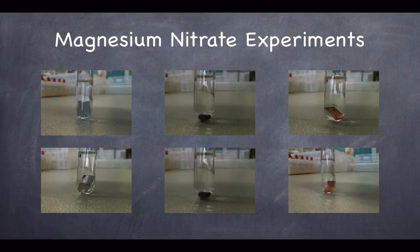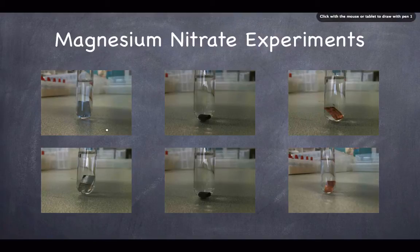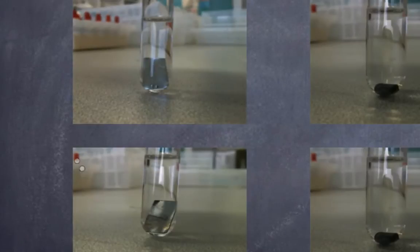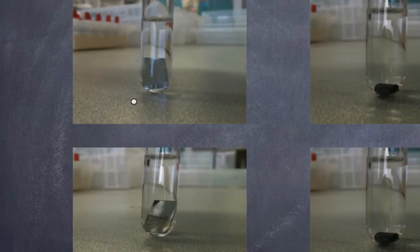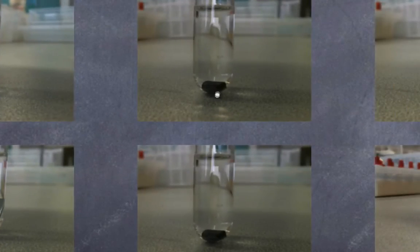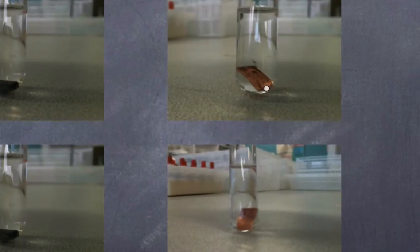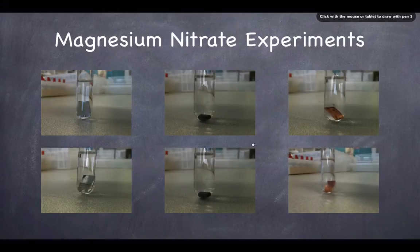Let's start by looking at the magnesium nitrate experiments. At the bottom of the screen you can see the before photos and at the top the after photos. The two photos on the left deal with zinc placed in magnesium nitrate solution — there's not a great deal of difference before and after because these two substances don't react. The same is true for lead and copper — nor do they react with magnesium nitrate.